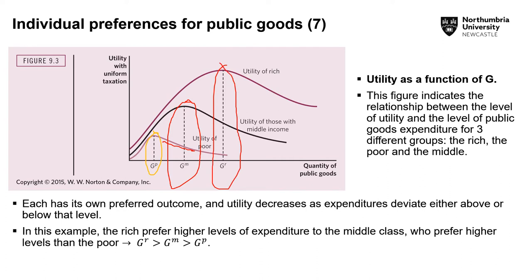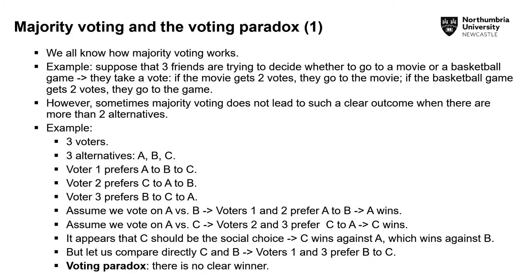Each income group has a different preference for public expenditure, and if actual expenditure deviates from that preference, utility is no longer maximized. In this example, the rich prefer high levels of expenditure relative to the middle class, who prefer higher levels than the poor. Now the question is: how do we reconcile these preferences? We can use a voting system — and indeed, this is how democracies function. You vote for politicians and political parties that offer a certain promise, such as spending more on policing or health care.